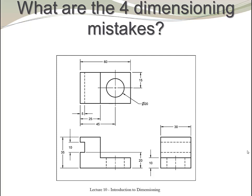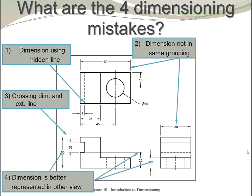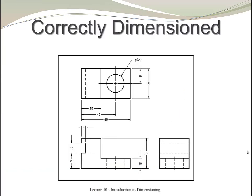Let's do another example. What are the four dimension mistakes in this drawing? Let's start by that this dimension is actually measuring a hidden dimension. In this case, these dimensions are better done when used in a group. In this case, we see that there is an extension line and a dimension line that are crossing. And in these different cases, we see that these dimensions are better represented in other views. This is the final and corrected dimension format for this particular drawing.